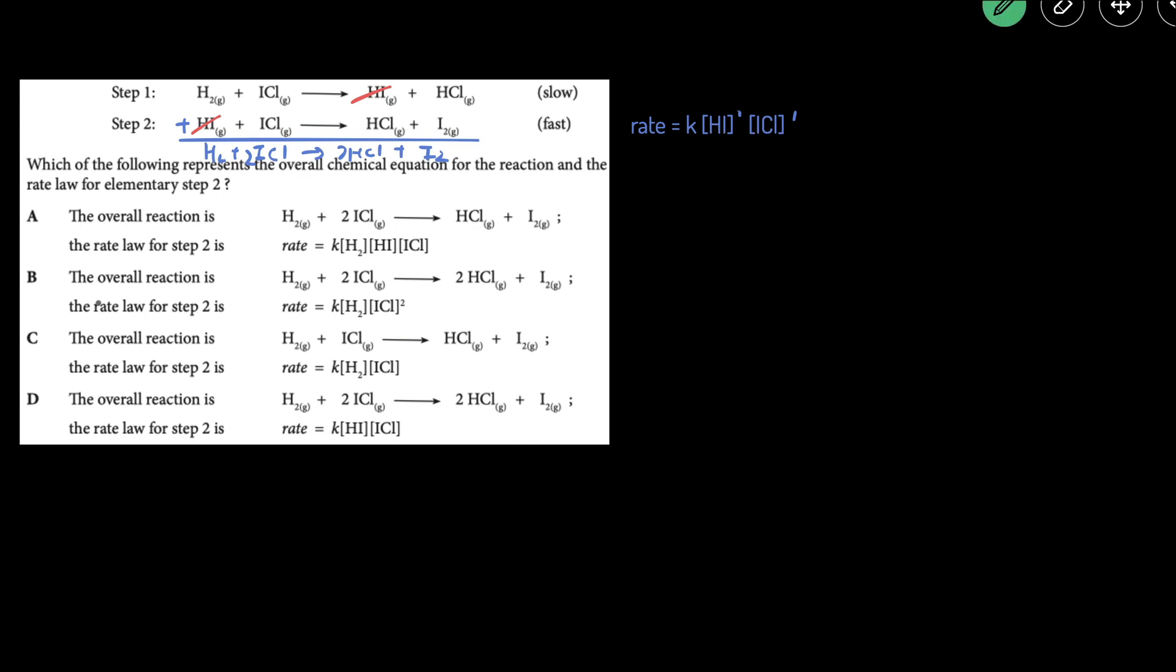That means that the answer should be D. We have H2 plus 2ICL goes to HCL and I2, and then the rate law for step two is rate equals K times HI, concentration HI to the first power, and concentration ICL to the first power.